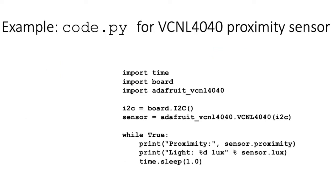Here's an example of a code.py script. We'll learn more about how the different parts of it work in later parts of this module. But to start, there are three main parts. The first part is to load the code modules that are necessary in order to extend CircuitPython to have the capabilities that we need for running the board and the particular sensors that we want to use.